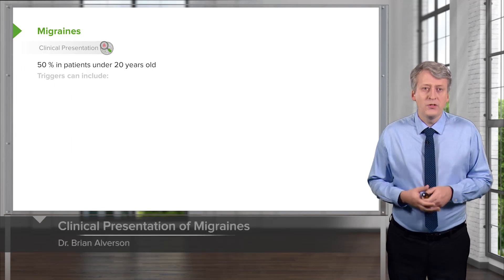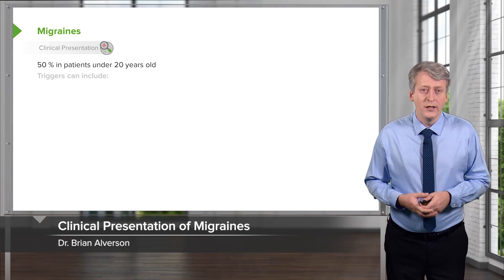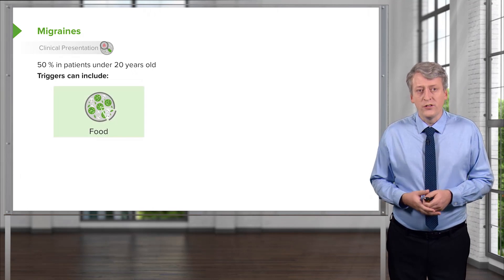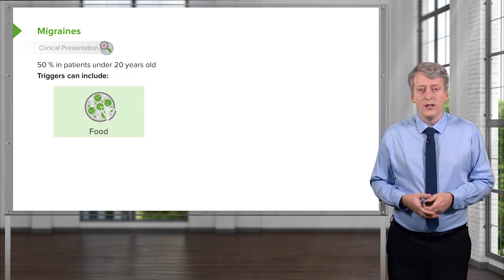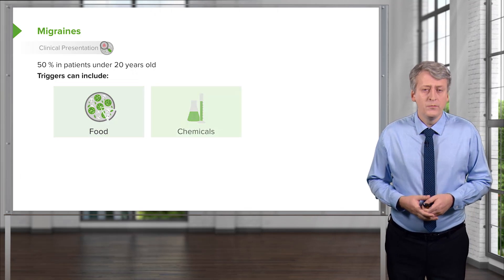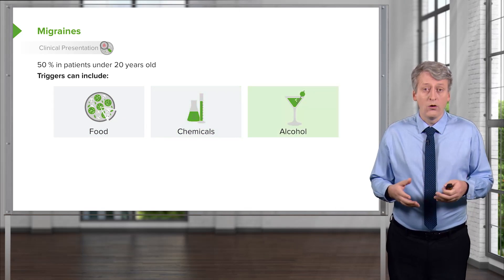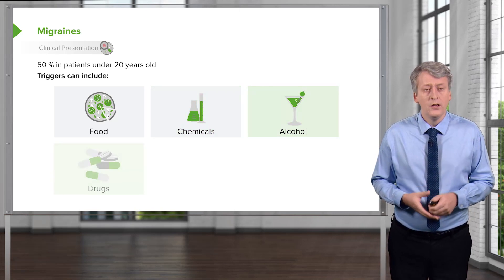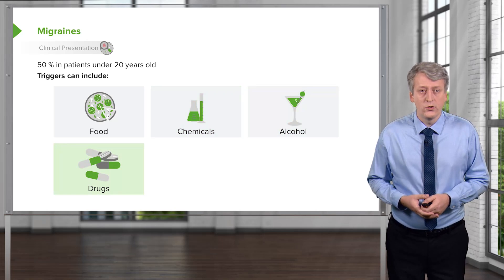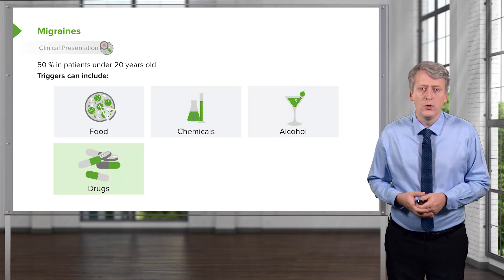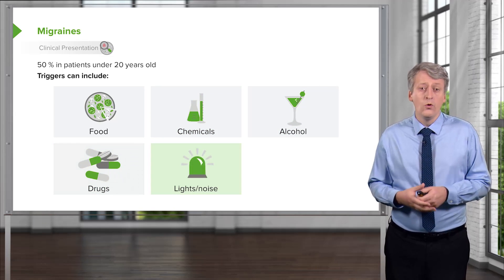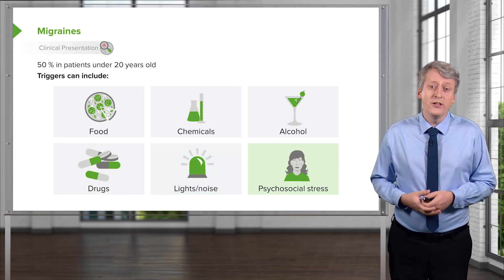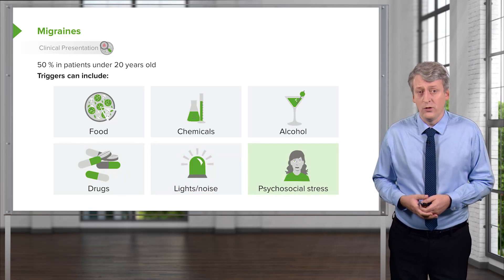Generally, 50% of migraines will start in people under 20 years of age. Triggers of migraines can include certain types of food, certain chemicals, alcohol — especially red wine or certain types of alcohol — certain medications can trigger migraines, and lights or noise can trigger migraines. Additionally, psychosocial stress can trigger migraines.